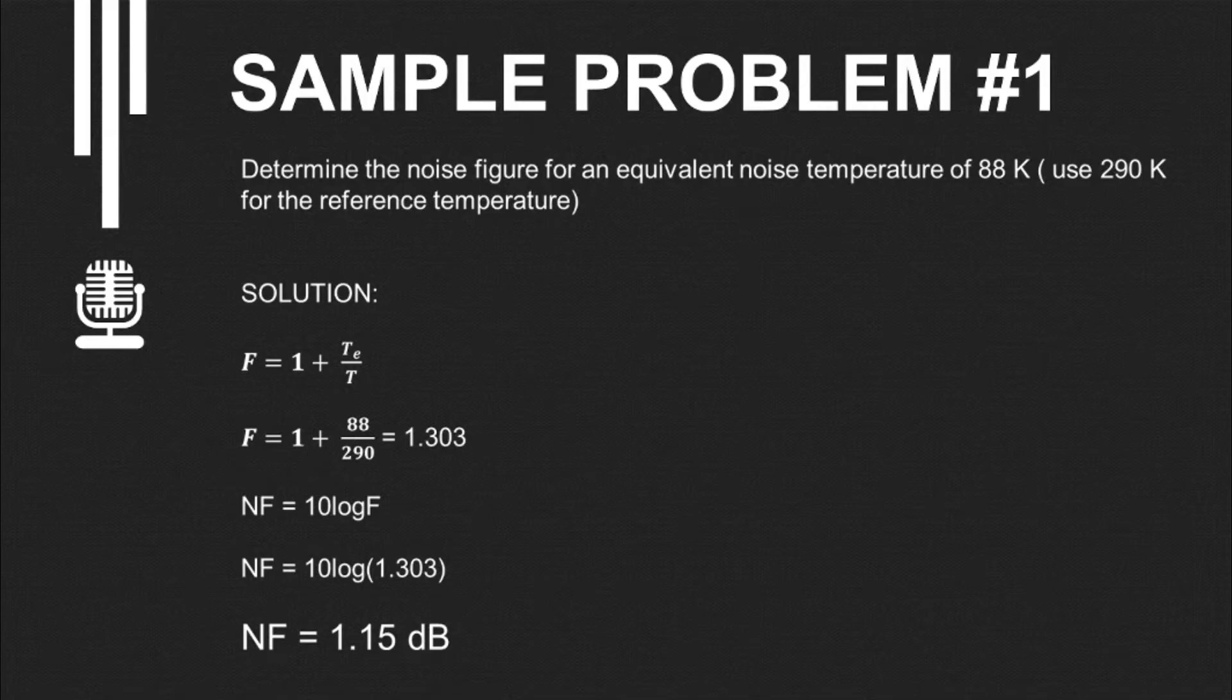The 88 is our equivalent noise temperature, and the temperature is 290 Kelvin. We get 1.303. But we're looking for noise figure, which is in decibels. NF equals 10 log F, so 10 log 1.303. We get that the noise figure is 1.15 decibels.